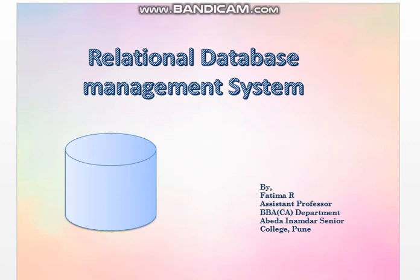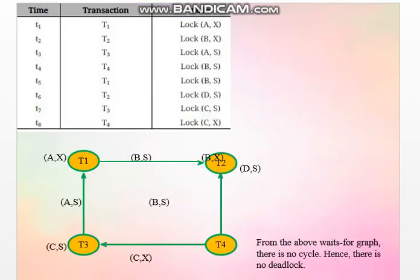In the previous lecture, we have seen how to identify whether the transaction is deadlock-free or it is in the deadlock. We identify whether the system is in the deadlock or deadlock-free by using a wait-for graph. If the wait-for graph contains a cycle, it means the system is in the deadlock. If the wait-for graph is without a cycle, it means it is deadlock-free.